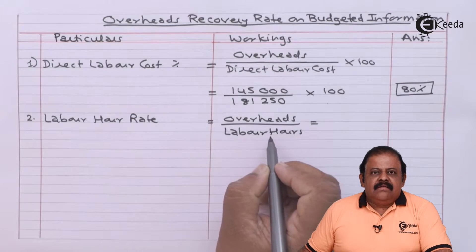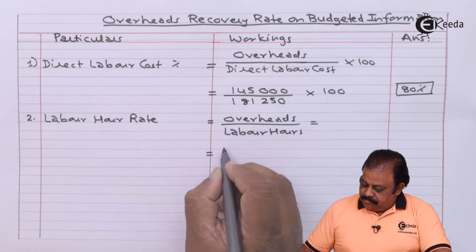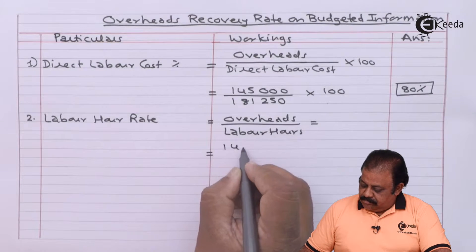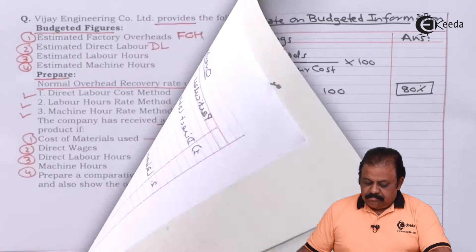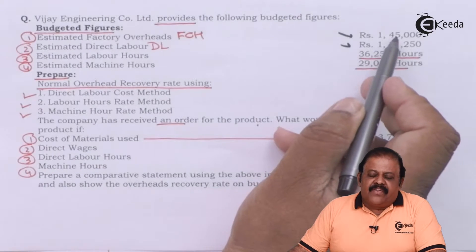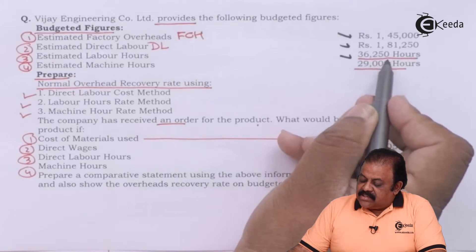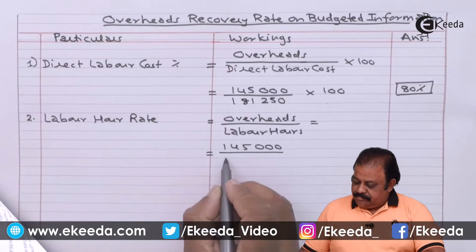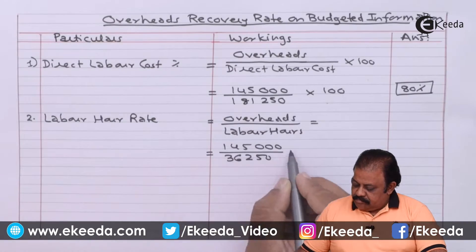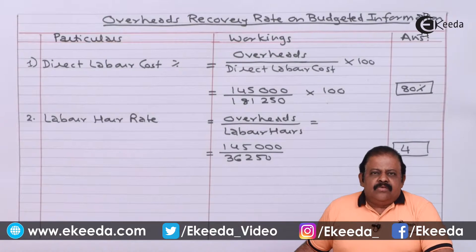So it is 80% on wages per hour. For the labor hour rate, that is overheads divided by labor hours: overheads are 1,45,000 and labor hours given are 36,250 hours. So it is rupees 4 per hour.